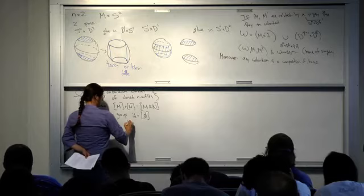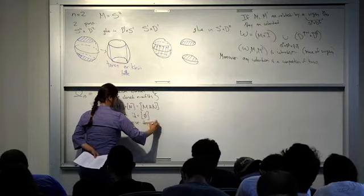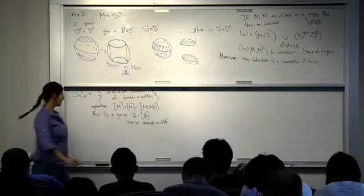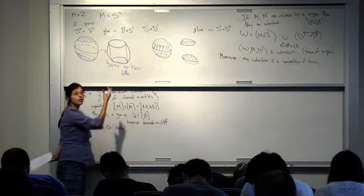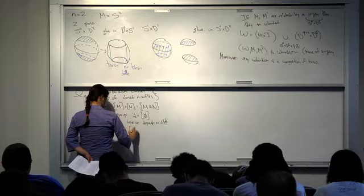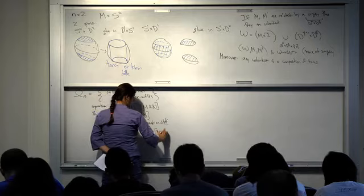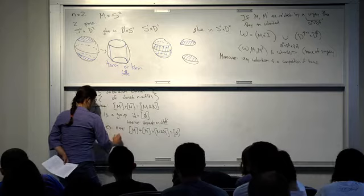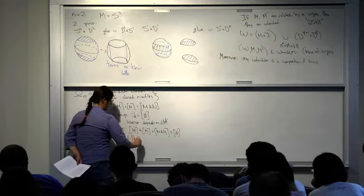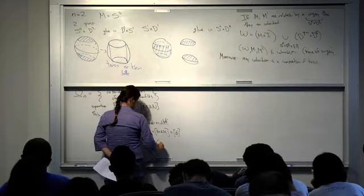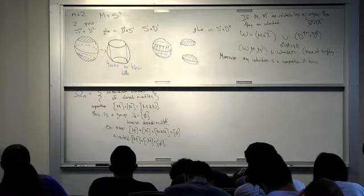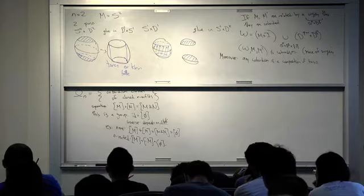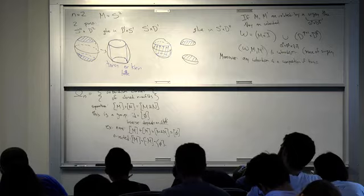For the inverse — and this depends strongly on the structure — in the case of unoriented cobordism, which is really where we've been working, the inverse is just M itself, because M disjoint union M is cobordant to the empty set. On the other hand, if we have orientation, then we need M disjoint union M with the reverse orientation, and that is the empty set. If you need more structure, you need more information about exactly how you do things.